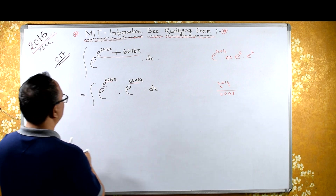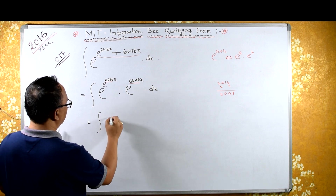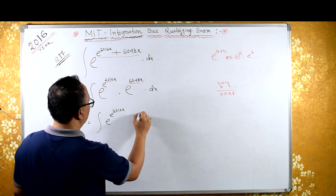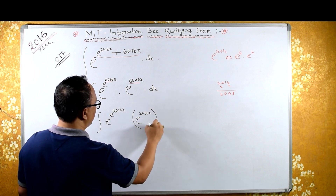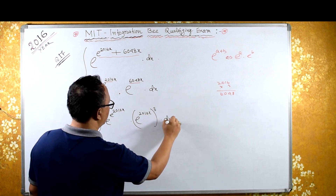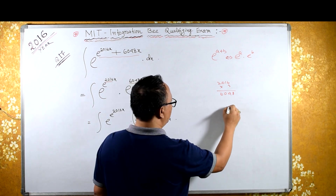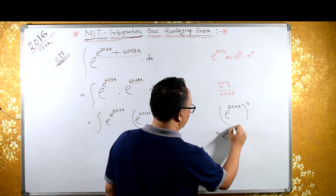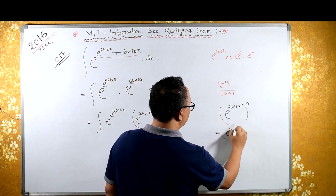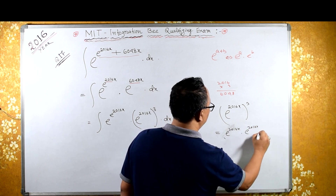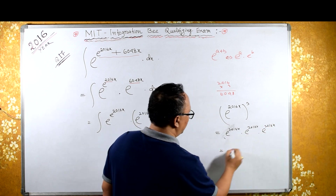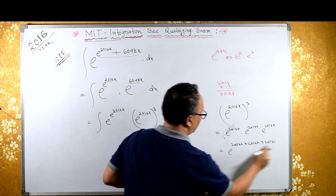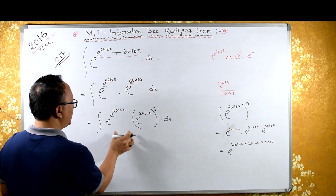So what I can do is, from here, write e raised to e raised to 2016x, into e raised to 2016x raised to the cube, dx. Because e raised to 2016x raised to cube means you write it 3 times: e raised to 2016x, into e raised to 2016x, into e raised to 2016x. Since bases are equal, you can add the indices — this is 2016x plus 2016x plus 2016x, which is 6048x. Therefore this is the same as this.